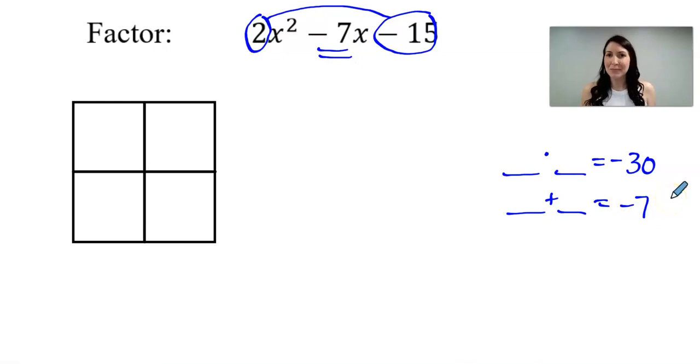So this may take some time to decide what are the two numbers that multiply to negative 30 and add to negative 7. In this problem, they would be negative 10 and positive 3.